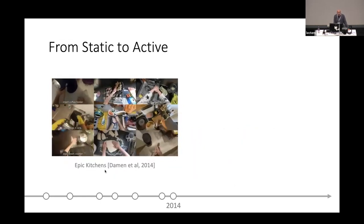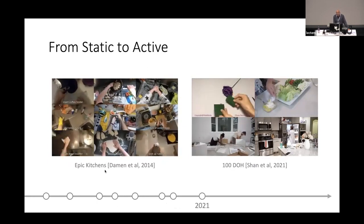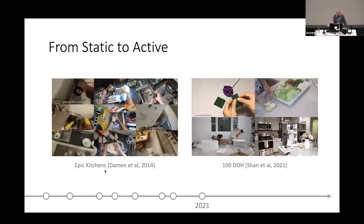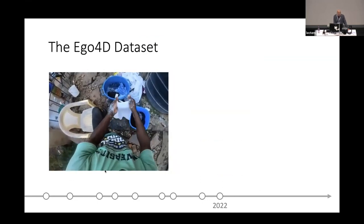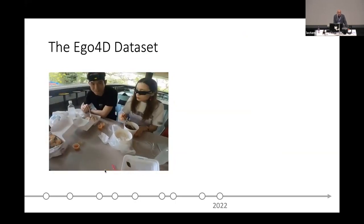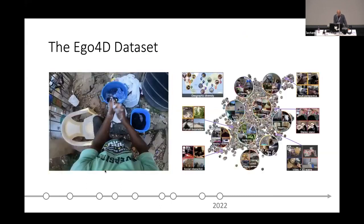Datasets have moved from static to active datasets, with many now corresponding to human activity. And we have finally what I think of as the mother of all datasets: Ego4D. This paper has 84 authors; the first author is Kristen Grauman, who is actually giving the next talk, and I'm the last. This is a dataset collected around the world of people doing activities like having breakfast, washing clothes, or playing the piano. We now have more than 3,500 hours of video, collected from about 15 different places around the world.